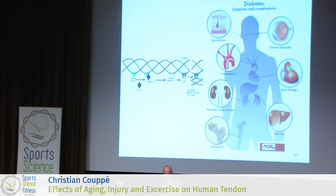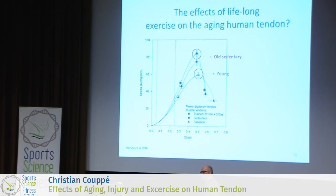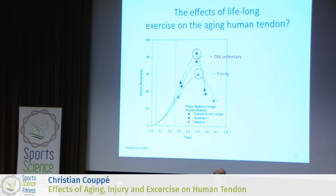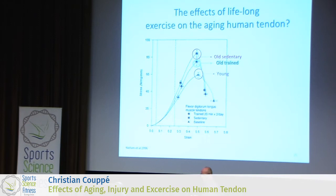Is there something we can actually do about this? Maybe training. There have been many studies looking at lifelong training. We know that master athletes live longer and are in many ways younger than their sedentary controls. A Danish study from the mid-90s showed that if you train rats for their whole lifespan, you can demonstrate at the tendon level that you get a more youthful tendon — less stiffening, more compliant tissue — but what about at the human level?